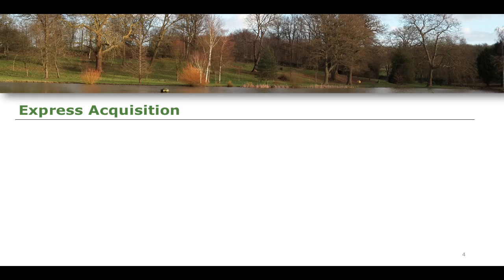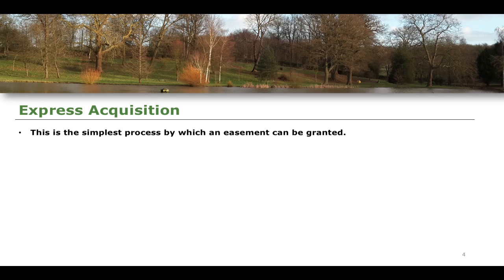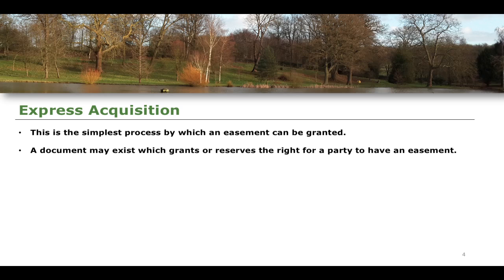Let's begin with express acquisition. This is the simplest process by which an easement can be granted, other than through statute — it is the simplest of the three main methods. Essentially, what is required is that a document exists which grants or reserves the right for a party to have an easement, potentially within a particular transaction or through the acquisition of property deeds. And that's simply it — that's the beginning and ending of how an acquisition can take place by way of express easement.